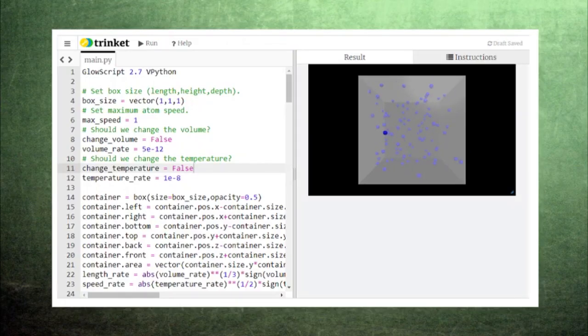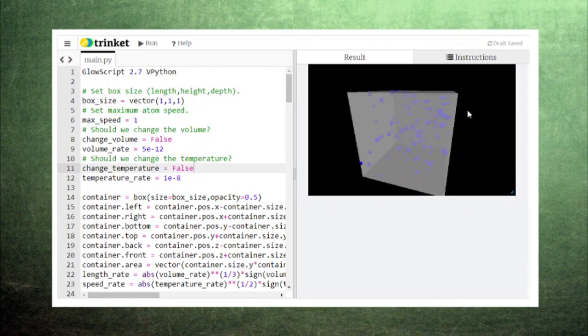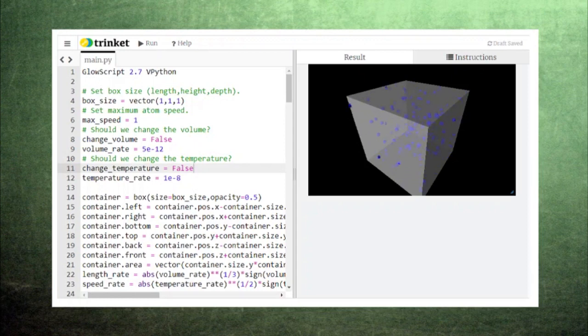When we run the code, we see that our particles start moving in their random directions. When they collide with the edges of the box, they turn around and when they collide with each other, they exchange momentum.